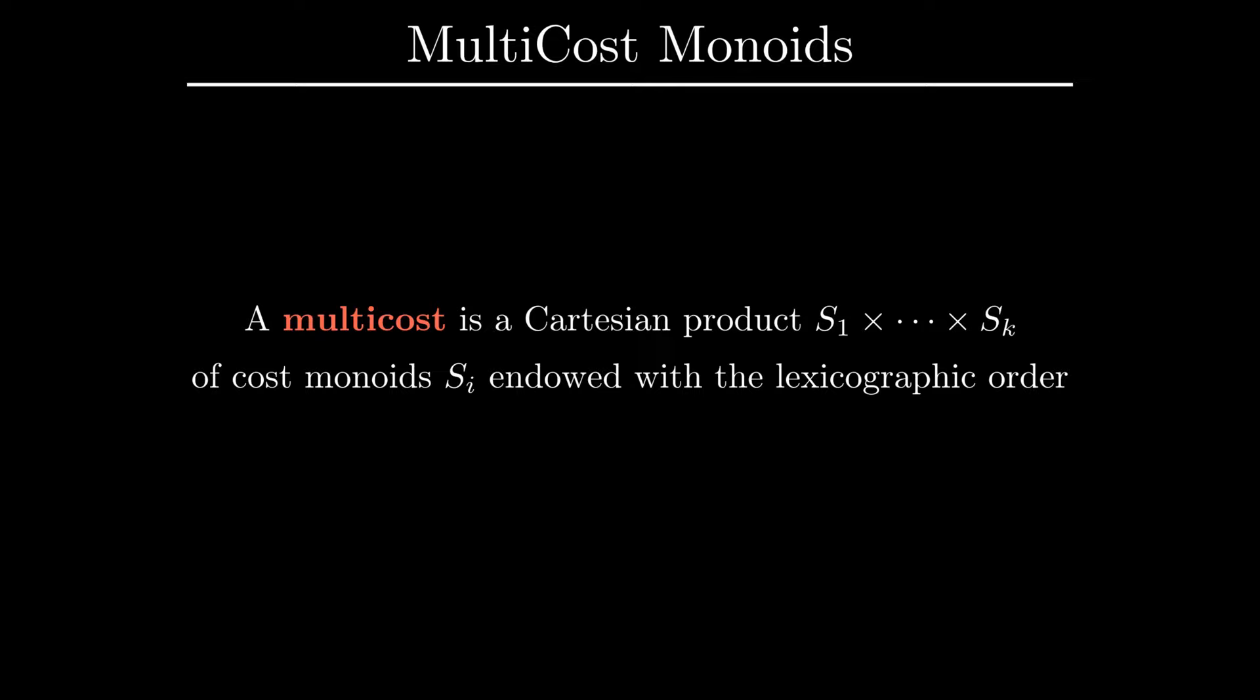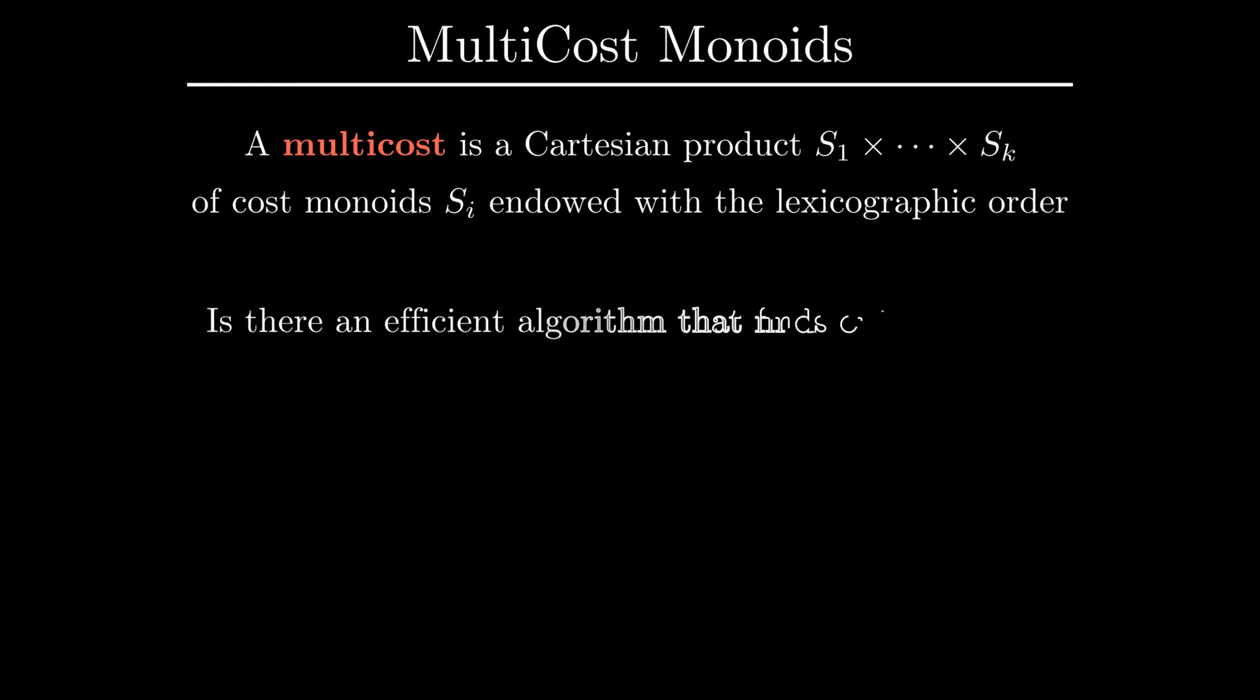Let us introduce the notion of a multi-cost, which stands for a Cartesian product of cost monoids with lexicographic order. As we have just discussed, the class of multi-costs is wider than the class of cost monoids, and Dijkstra algorithm may fail to find an optimal path in a graph weighted by a multi-cost. Such weights do appear naturally in the framework of minimal violation planning, and in particular in its application to autonomous vehicles, where regulations on minimal clearance to other road agents are naturally modeled by multi-costs with R_min factors. In the rest of this presentation, we concentrate on the following question: How can we efficiently find optimal paths in graphs weighted by multi-costs?